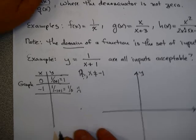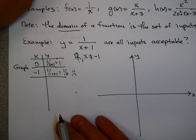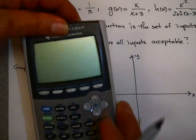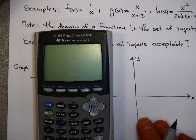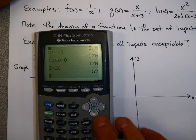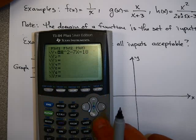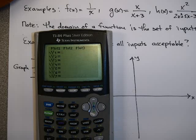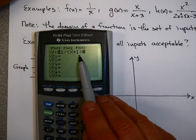I'd like to draw a graph by plotting points, and I'm going to use the table function on my calculator. Turn your calculator on, clear the screen, and press the y equals button. Clear it, and then enter 1 divided by parentheses x plus 1. It's very important to put parentheses around the entire denominator — otherwise it would be 1 over x, then add 1, which is different.